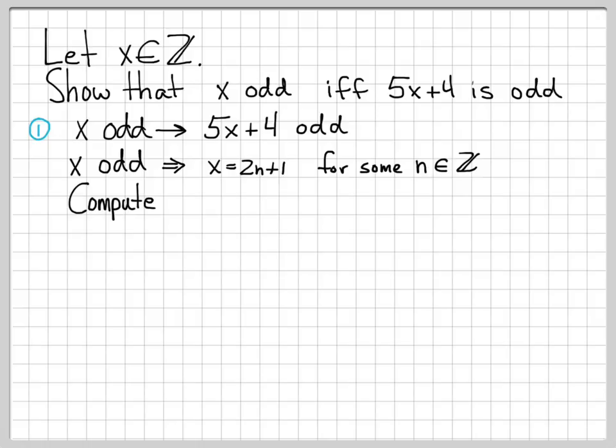Let's do a computation now. If this is the form that x has to be in, let's compute the quantity 5x plus 4. I have 5 times x, x is 2n plus 1, plus 4. This is equal to 10n plus 5 plus 4, just multiplying the 5 through, which is equal to 10n plus 9.